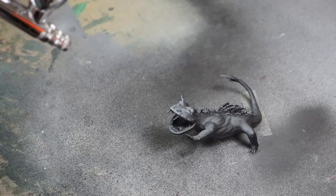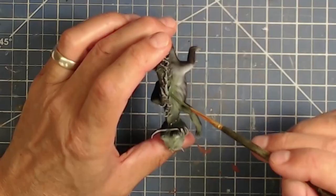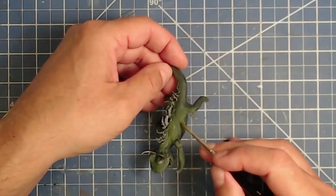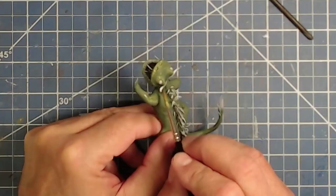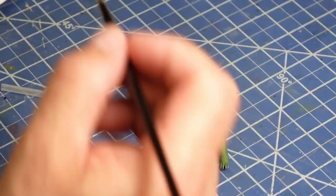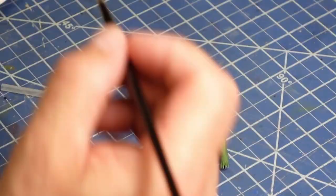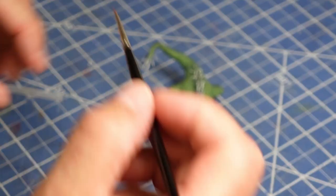The Hodag gets a black base coat, then a white zenithal highlight. His base color is applied with the green craft paint thinned down to glaze consistency. It takes several coats to get the desired saturation. The gradual buildup allows retaining the highlights and shadows of the zenithal prime. His mouth gets the same treatment with red.